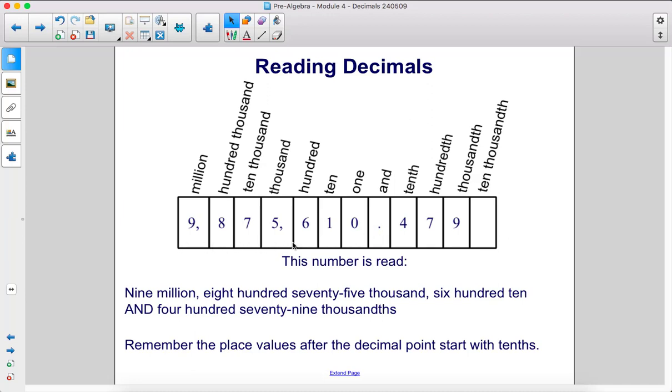So this is the number to the left. So we have three places there, three more. We're in the million place value here. 9,875,610 and 479 thousandths. Remember, the place values after the decimal point start with tenths.